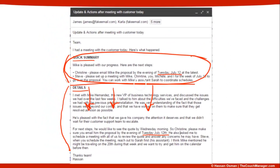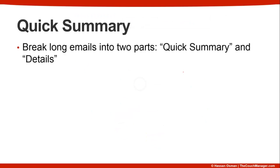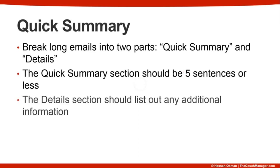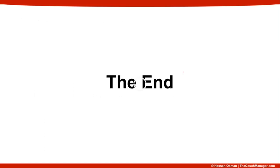Let's wrap up with a quick summary: break long emails into two parts — a quick summary section and a detail section. The quick summary section should be five sentences or less, and the detail section should list out any additional information. Thanks for watching, and in the next video we'll talk about how to make your emails scannable.